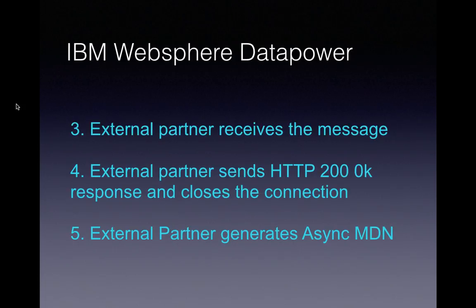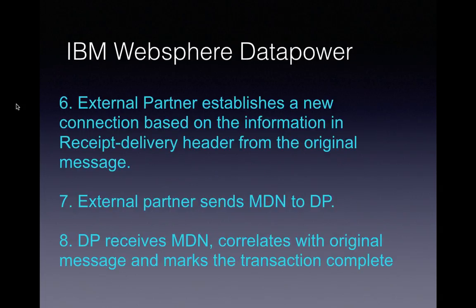After the connection ends, the external partner generates the async MDN — the Message Disposition Notification. After generating the MDN, it establishes a new connection using the information available in the receipt delivery header from the original message that was sent by DataPower to the external partner.